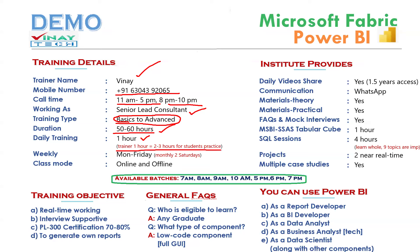My one hour equals two to three hours of practice for you. Initially, you may feel the training is going at a basic level. But the training is fully practical and close to real time. My one hour equals a minimum of two to three hours of practice. If I take two hours, six to eight hours of practice time is required for you. Virtually it is possible, but physically not possible.